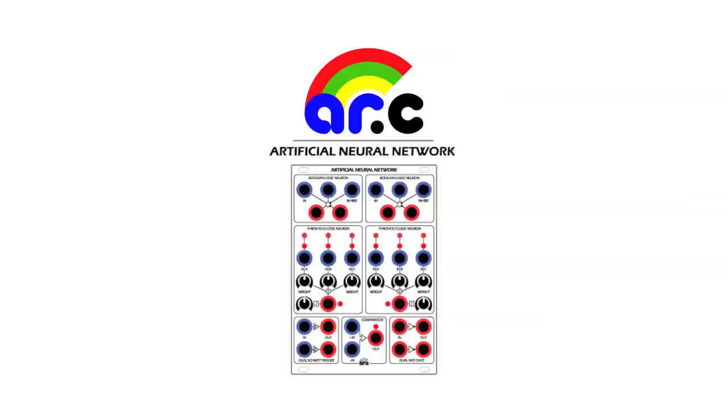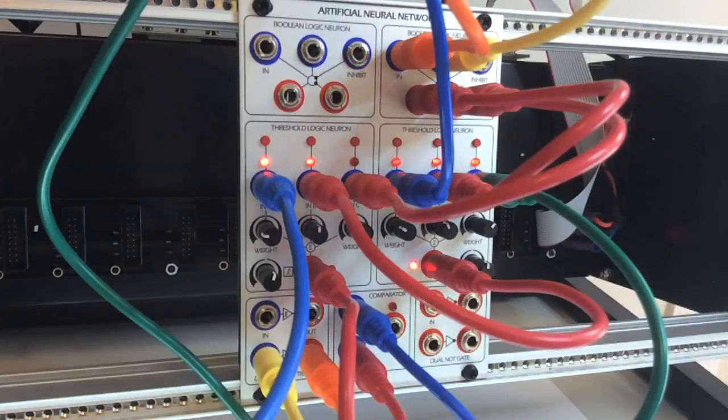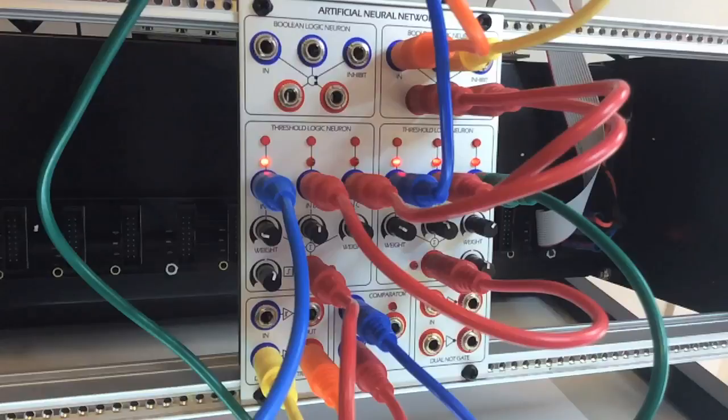The ARC ANN is a Eurorack Synthesizer Module comprised of several submodules for Programmable Logic, CV Processing, and Wave Shaping.